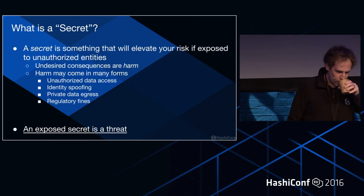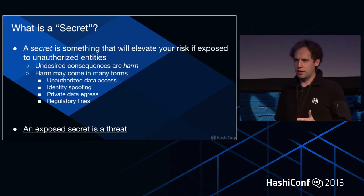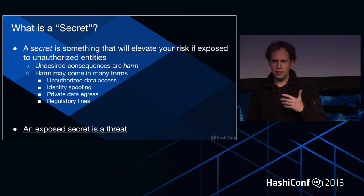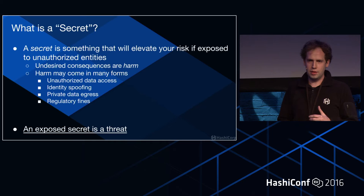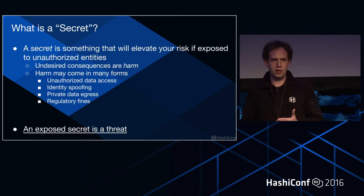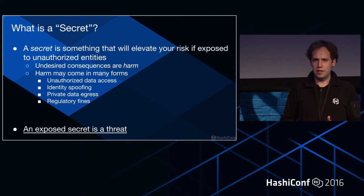What is a secret? A secret is something that elevates your risk if it gets exposed to unauthorized entities, and that causes harm. Harm can come in many forms: unauthorized data access, regulatory fines, or even embarrassment to the company. If your CEO says something embarrassing that causes the public to lose trust or decide they don't want to do business with you, that eventually leads to harm. Any exposed secret, by definition, is a threat — it elevates your risk.